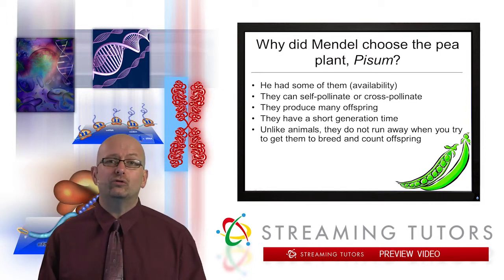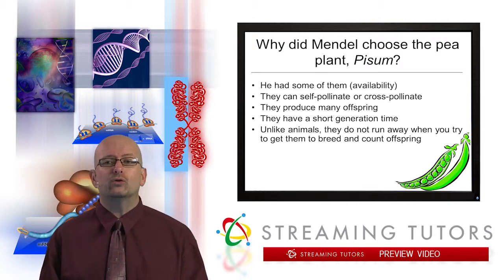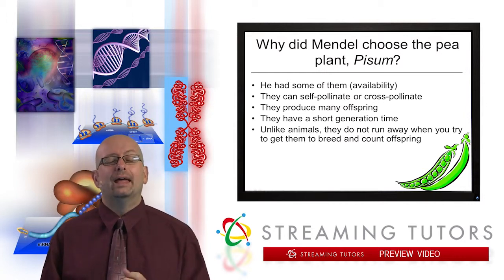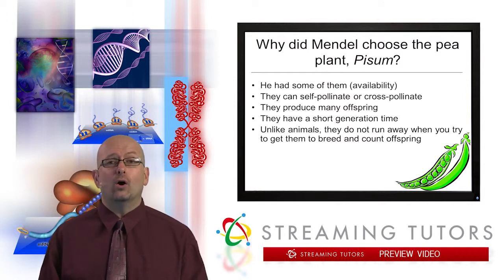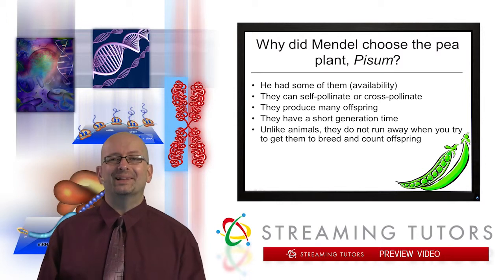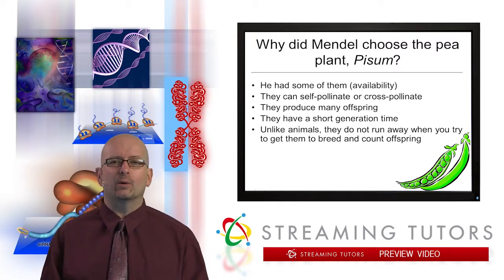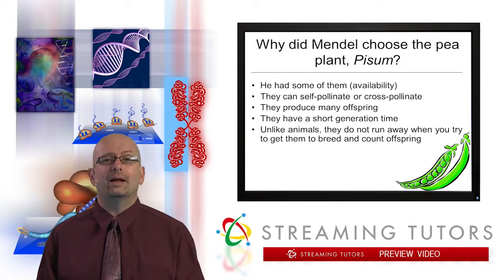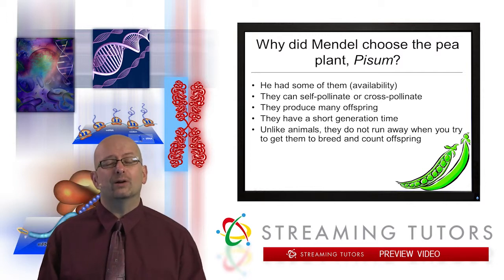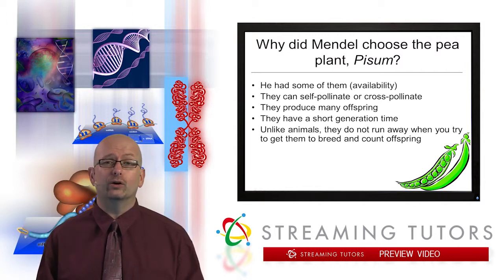The last advantage may sound silly, but it's very true. Unlike animals, pea plants don't run away when you want to breed and count them. Anyone who's worked with fruit flies knows you have to anesthetize them, and they'll sometimes wake up and fly away mid-count, compromising experiments. Plus, you can't force animals to breed. With peas, you just take a little paintbrush, pick up some pollen, wipe it onto the female part of the flower, and you've done a fertilization event. These are among the reasons the pea plant is a very good experimental organism.